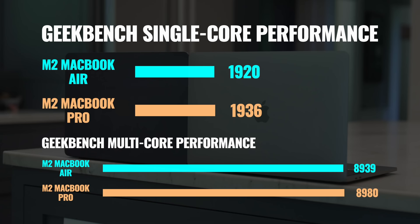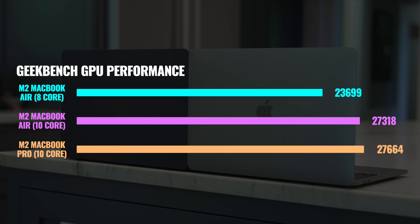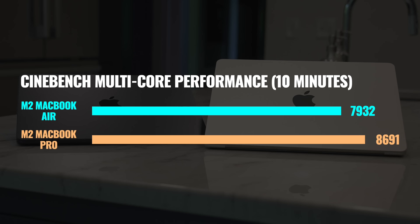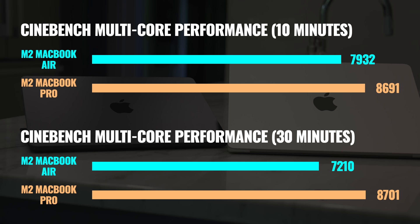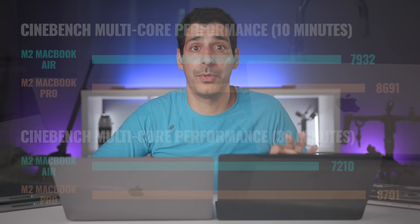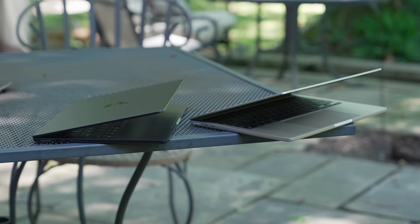I tested CPU, GPU, and SSD performance. Since both models share the same CPU cores, short-term single and multi-core performance is virtually identical. But when looking at GPU performance, we can see a major difference between the 8 and 10-core MacBook Air models. In Cinebench, single-core performance was the same, but look at the difference in the 10-minute multi-core test. When I ran a 30-minute test, the Pro was able to maintain performance while both the 10 and 8-core MacBook Air options had to throttle back to keep the chip cool. That said, most everyday tasks are single-core, so for the majority of things you're not really going to notice a difference.